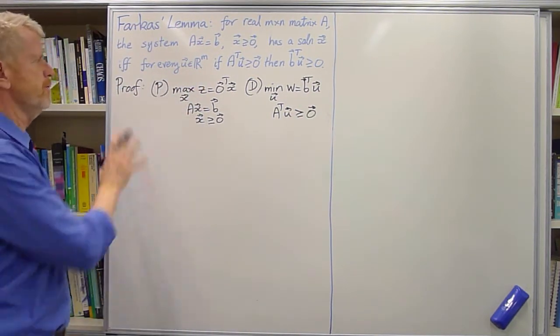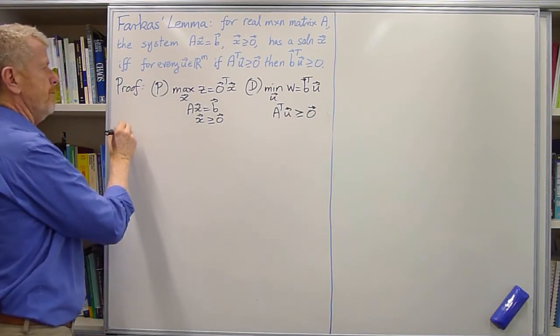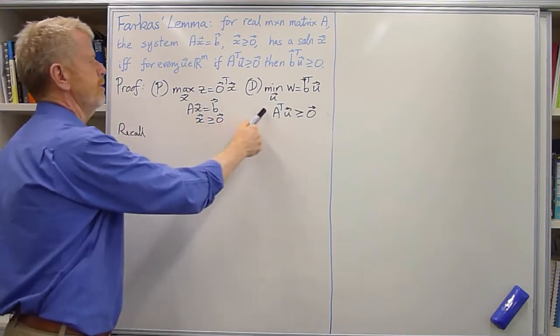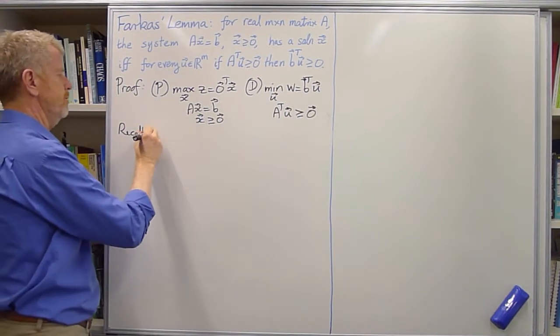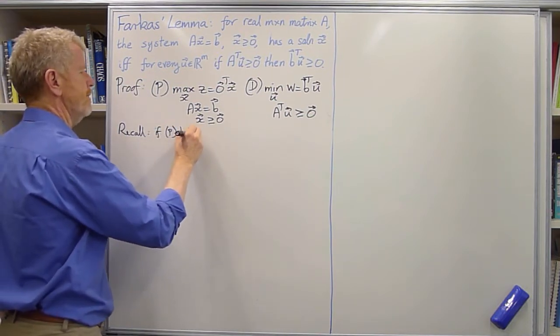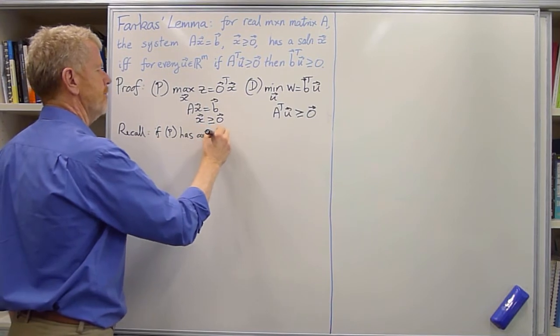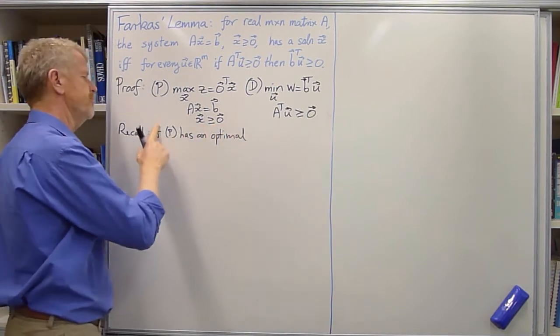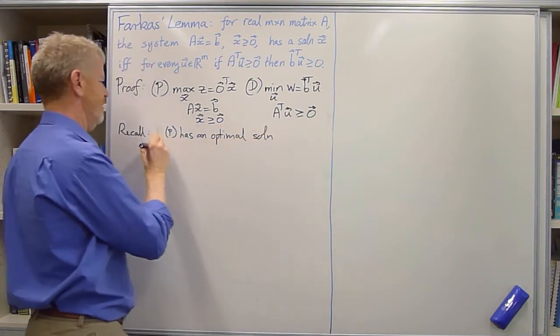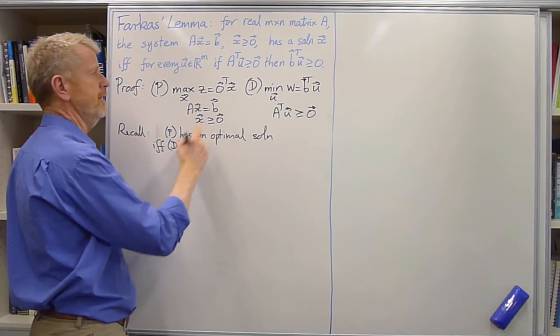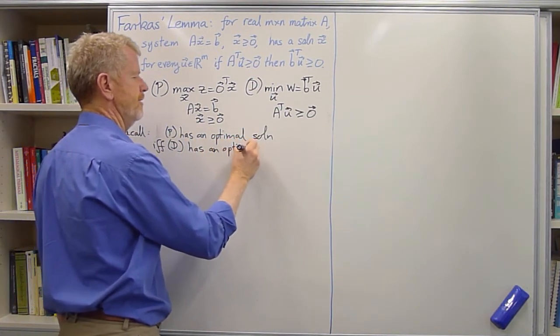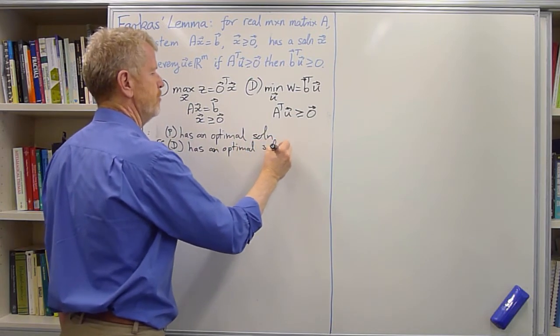And we do this because for such linear programs, the primal and the dual, recall two facts: that if the primal P has an optimal solution, if and only if the dual D has an optimal solution, and we'll use that.